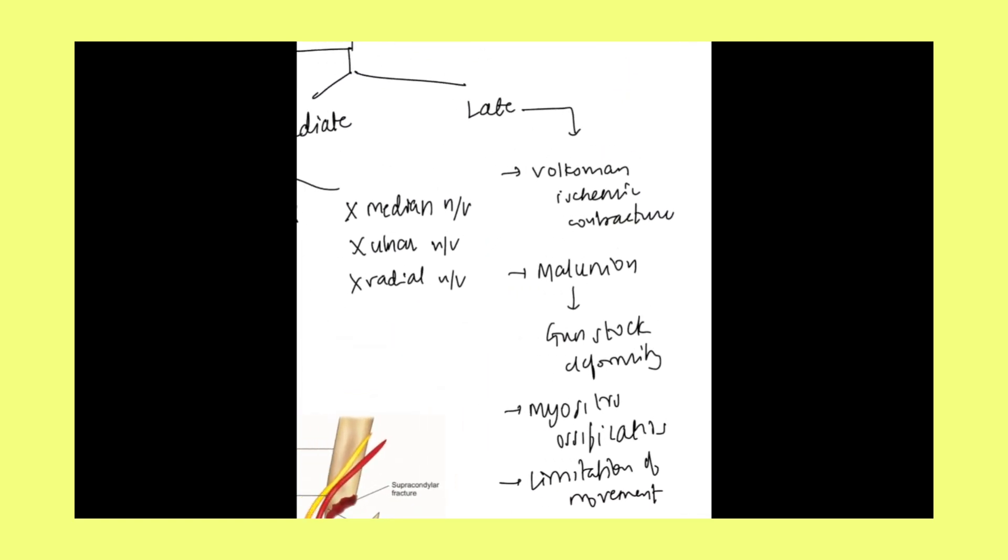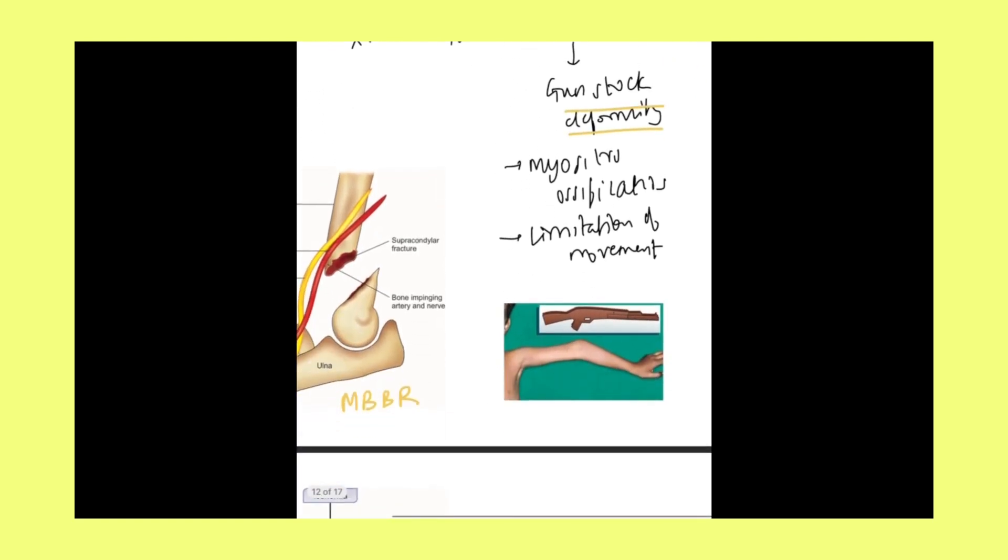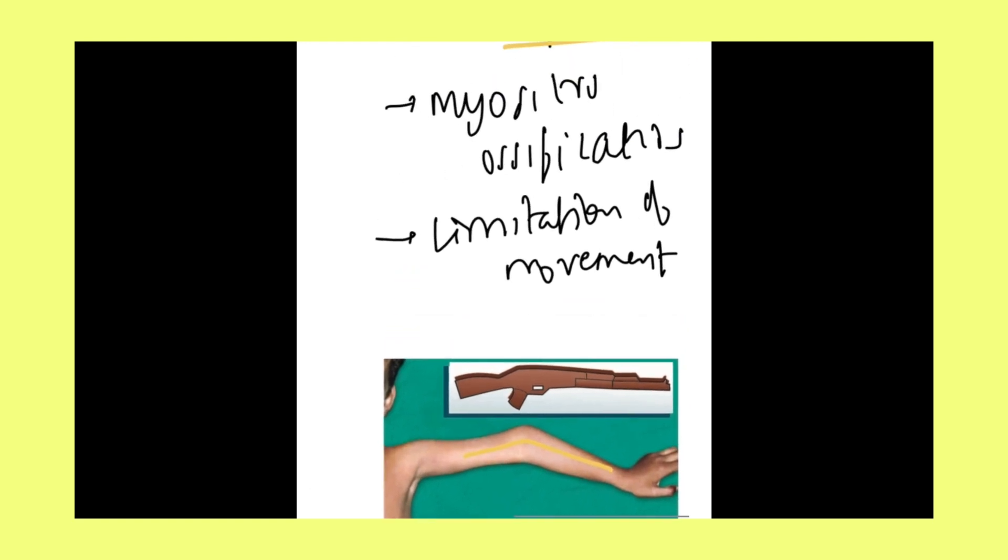Coming to the late complications: Volkmann ischemic contracture. Due to Volkmann ischemia, there will be a contracture of the muscle. Volkmann ischemic contracture, then malunion could occur, resulting into gunstock deformity. See here, malunion has occurred, and this gunstock deformity has taken place. Then myositis ossificans and limitation of movement.